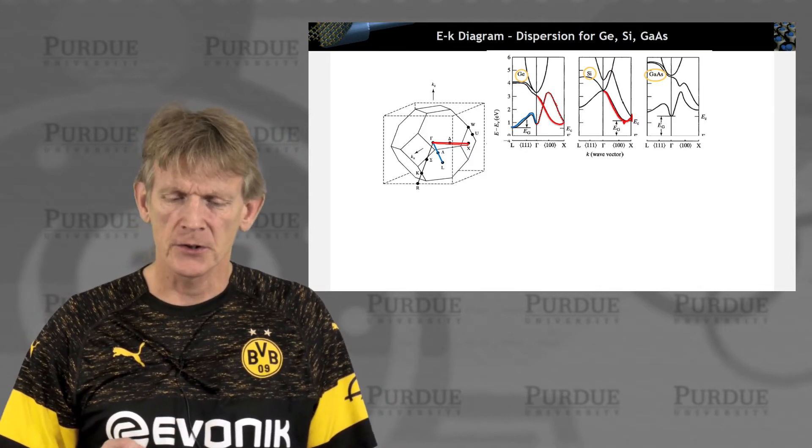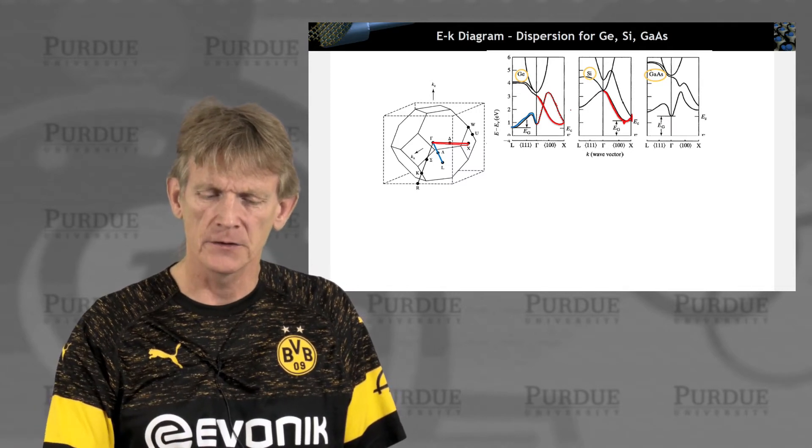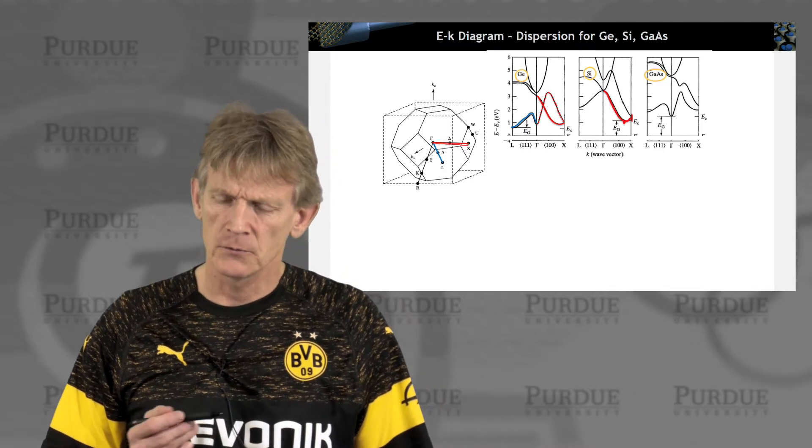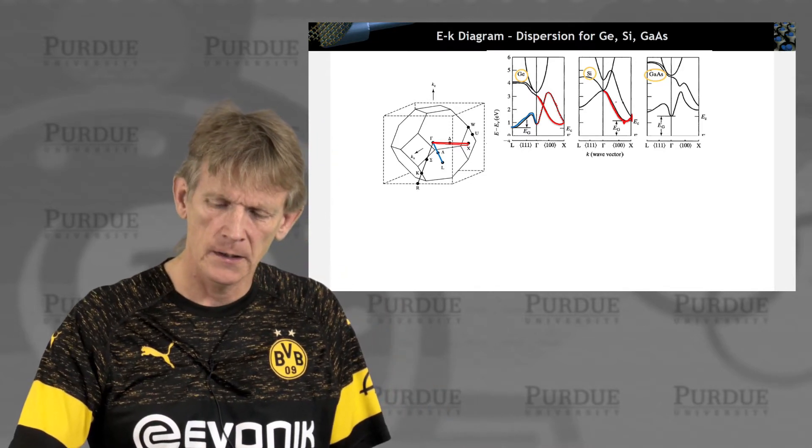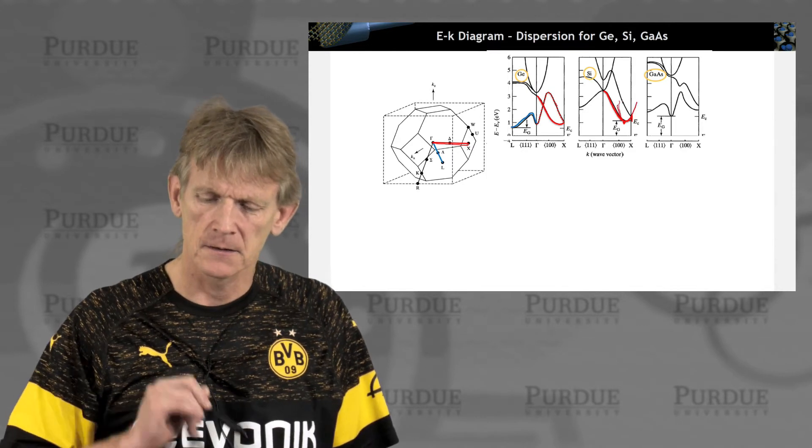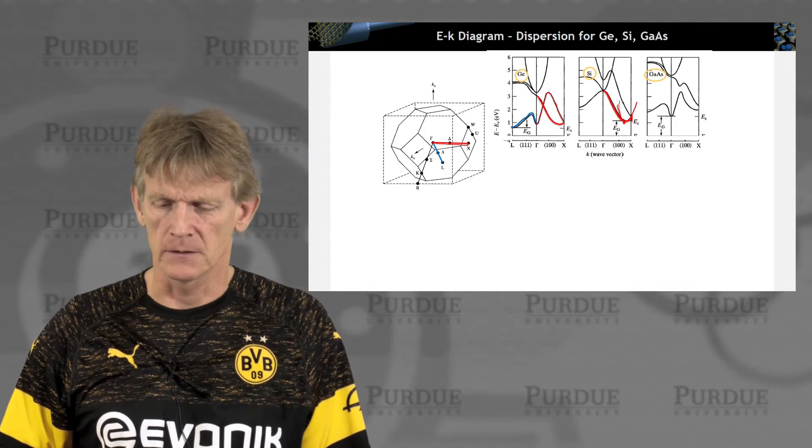And the dispersion is way high at gamma. And if you go in the L direction, it's also way high. So the really critical energy in dispersion for germanium is here towards the X point inside the Brillouin zone.